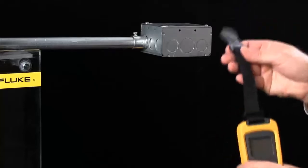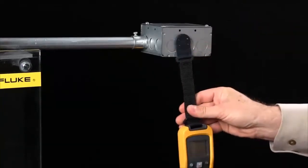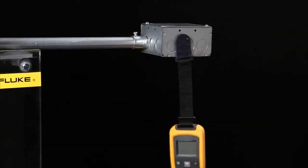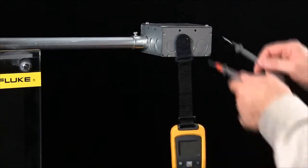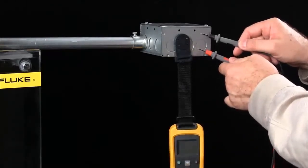Simply place the strap through the top of the meter and you can hang it on any enclosure, electrical box, wherever your application may be, and this allows you to keep your hands free to take safe electrical measurements.